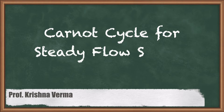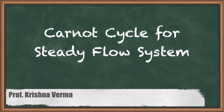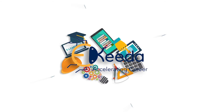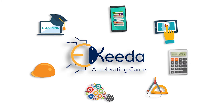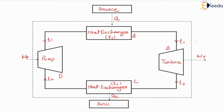Hello friends, in this video I am going to discuss the Carnot cycle for a steady flow system. As we know, the Carnot cycle is an ideal reversible cycle, and the steady flow system we consider as an open system. So let's start the discussion of the Carnot cycle for a steady flow process, or we can say open system, where the fluid continuously flows and the process is considered steady.